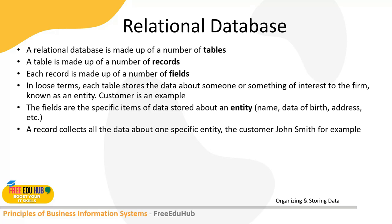A table is made up of records — just like in an Excel sheet we have rows and columns, here we call them records and fields. A record is a row in a table containing all the data pertaining to one instance of an entity. Each record is made up of fields, where a field is a characteristic or attribute of an entity stored in a database. Fields are specific items of data stored about an entity — for example, name, date of birth, address, etc.